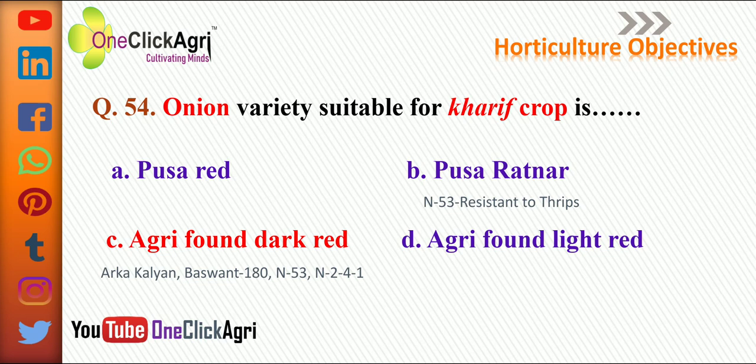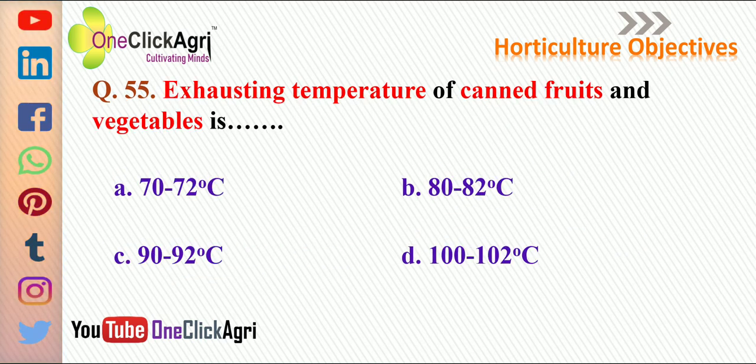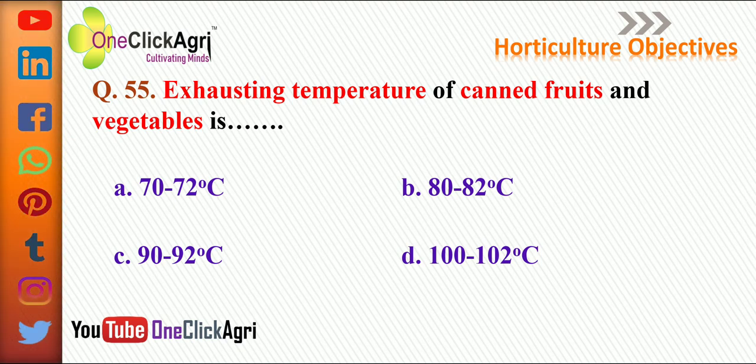Next question: exhausting temperature of canned fruit and vegetables is the right answer — 82 degrees Celsius. The rest of the temperatures required for vegetable and fruit sterilization methods have already been discussed. Please watch the previous lecture.